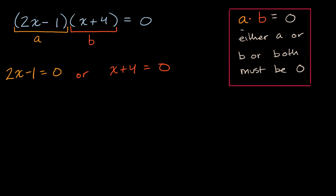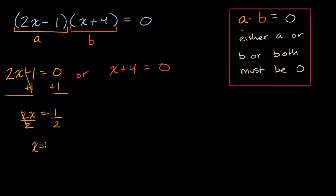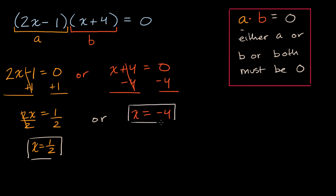Let's solve each of these. If two x minus one is equal to zero, we add one to both sides and we get two x is equal to one, then divide both sides by two — this is just straightforward solving a linear equation — and you get x is equal to one half as one solution. Or over here, if we want to solve for x, we subtract four from both sides and we get x is equal to negative four. So in an equation like this, you can actually have two solutions: x could be equal to one half, or x could be equal to negative four.